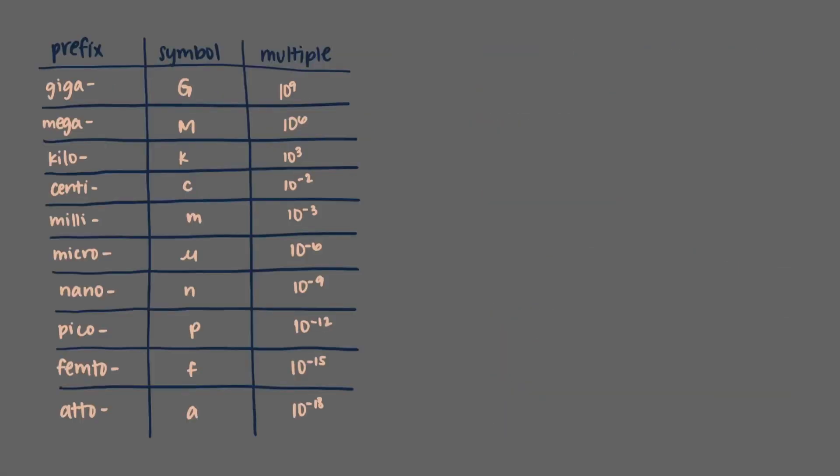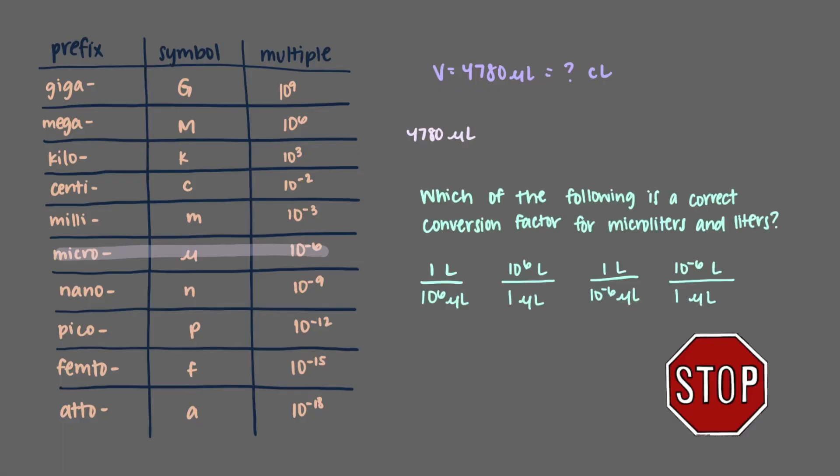Let's try a more complex conversion. We have a sample of gold with volume 4780 microliters, and we want to convert this to centiliters. Some people might try to look for a single step conversion, but the easiest way to do this, and the way that will be least likely to result in a mistake, is to do it stepwise. We'll first convert microliters to liters, and then from liters to centiliters using two separate conversion steps. We start with the thing we're studying, 4780 microliters. We see from the table that micro means 1 millionth. Which of the following is a correct conversion factor for microliters and liters?